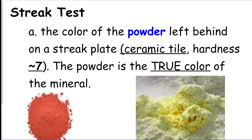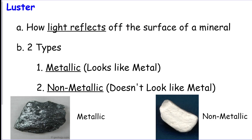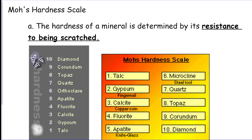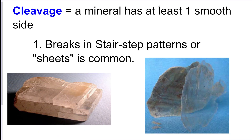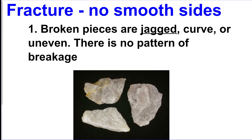We have the streak test — the powder left behind on a streak plate, which shows the true color of the mineral, making it a very reliable test. The luster test measures how light reflects off the surface; it can be metallic or non-metallic. The hardness test measures resistance to scratching — a mineral can scratch anything equal to or less hard than itself. For example, calcite can scratch gypsum and talc, and also another piece of calcite. Breakage pattern: cleavage means the mineral breaks with at least one smooth side, or in flat sheets or stair-step patterns. Fracture is a random, jagged, no-pattern break.